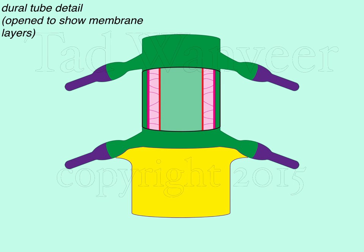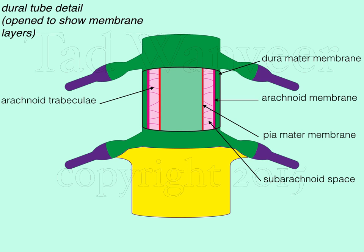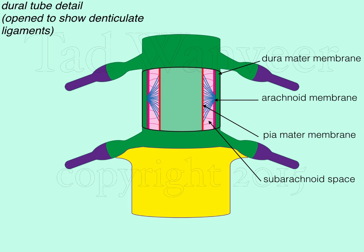In this illustration, a window has been opened to look into the dura mater membrane layers and spinal cord within a small section of the dural tube. The dura mater membrane is in green, attached to it the arachnoid membrane in magenta. The pia mater membrane in red encases the spinal cord. The subarachnoid space lies between the arachnoid and pia mater membranes, spanned by arachnoid trabeculae — strands of collagen, some of which are also fibroblasts. Denticulate ligaments, shown as blue lines, are collagen strands spanning laterally from the pia mater to the dura mater between all nerve root levels.